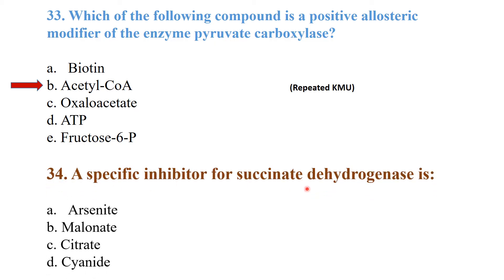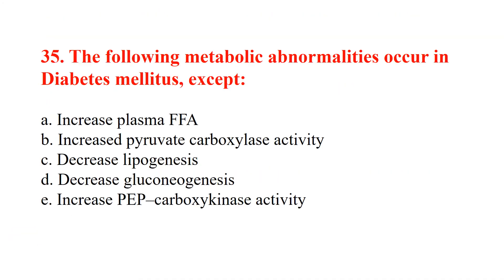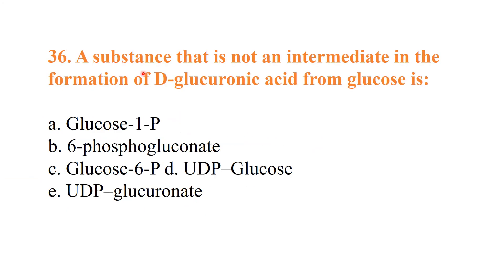The specific inhibitor of succinate dehydrogenase is malonate. The following metabolic abnormalities occur in diabetes mellitus except decreased gluconeogenesis — gluconeogenesis is actually increased in diabetes mellitus. A substance that is not an intermediate in the formation of gluconic acid from glucose is 6-phosphogluconate.